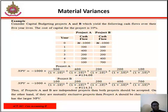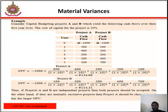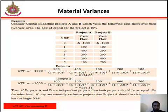Let's look at an example. Consider capital budgeting projects A and B, which yield the following cash flows over their five-year lives. The cost of capital for the projects is 10%. We consider from year zero to year five. The initial outlay starts at year zero, and cash inflows follow from year one to year five. Using the NPV formula for project A, we calculate the cash flows discounted at 10%.